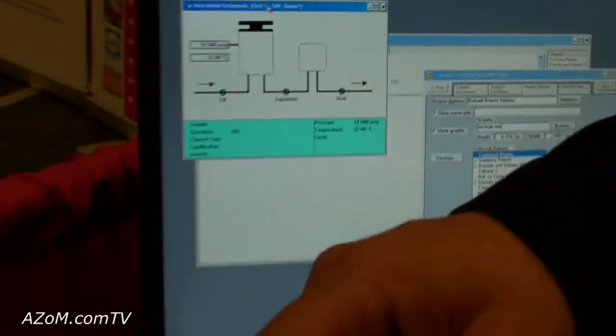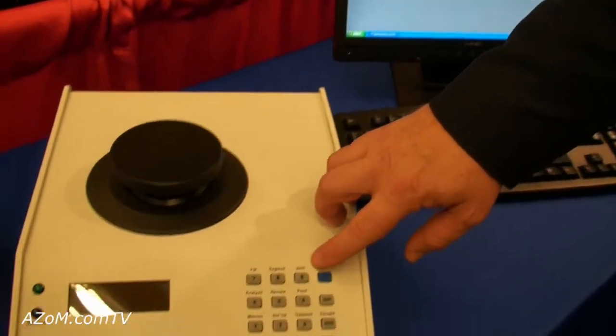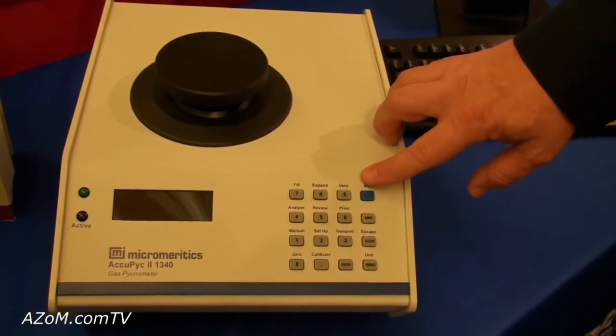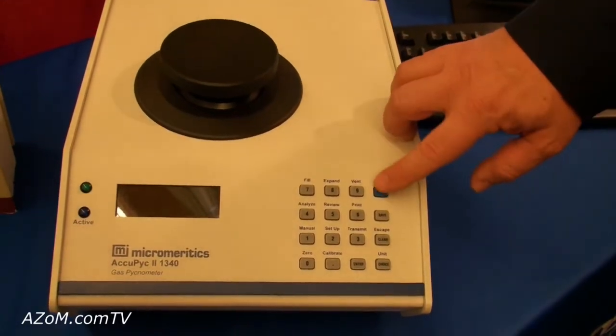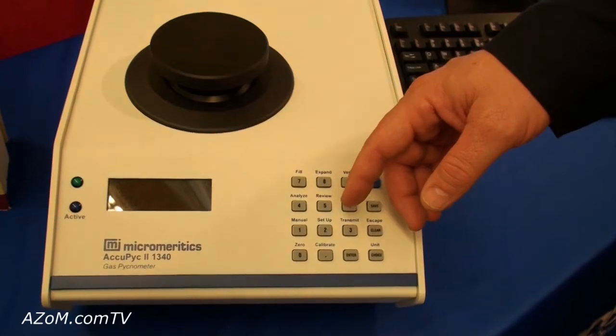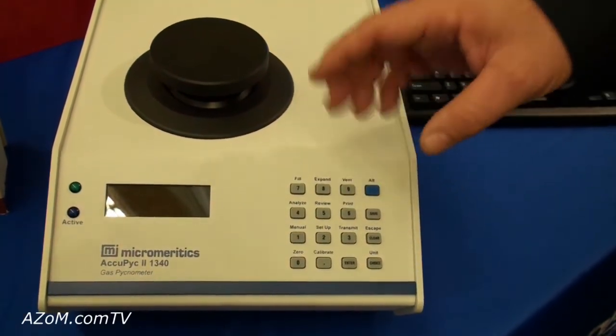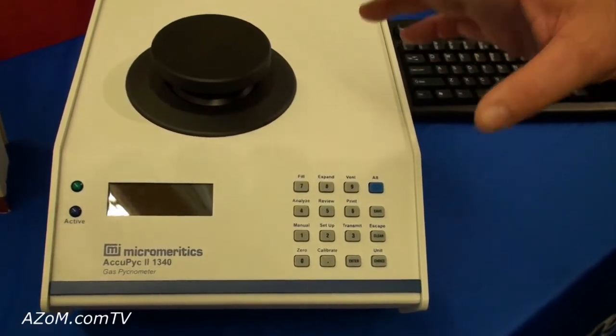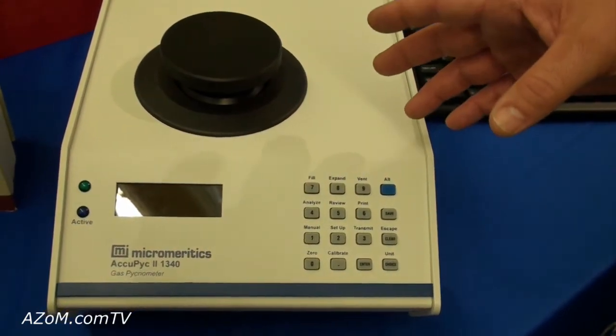The instrument can be controlled via the keypad here so that you can start an analysis by simply pressing the analyze button, entering a sample identification and a sample mass. What the instrument is really measuring is the volume of gas displaced by a sample.